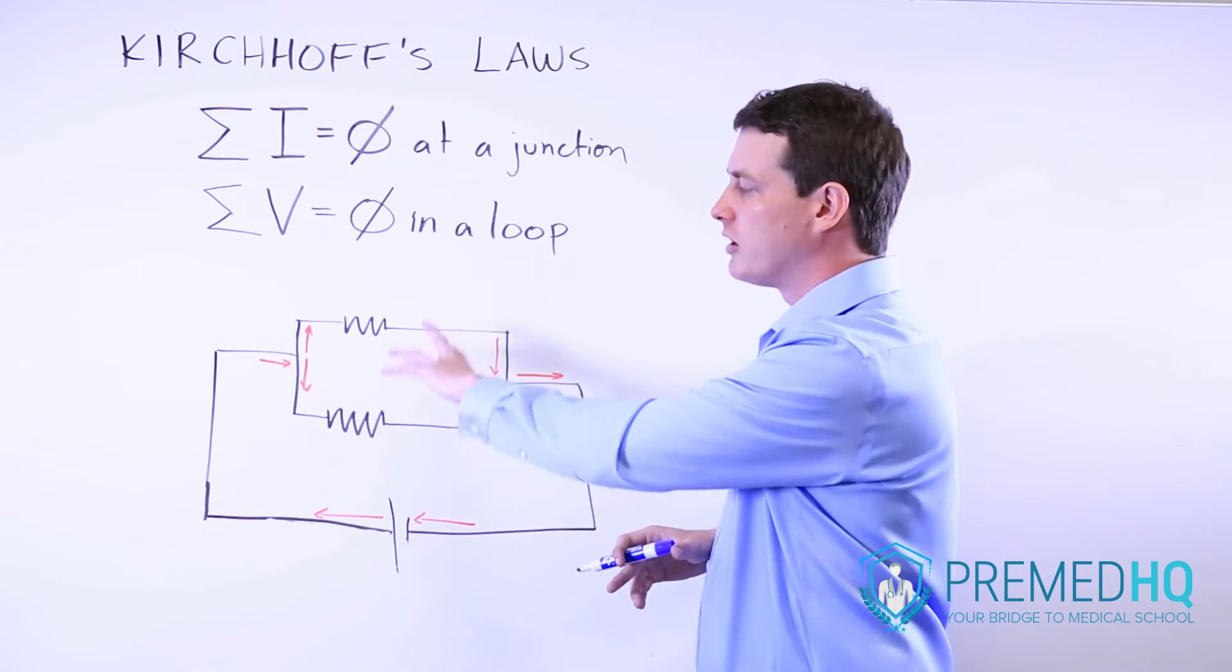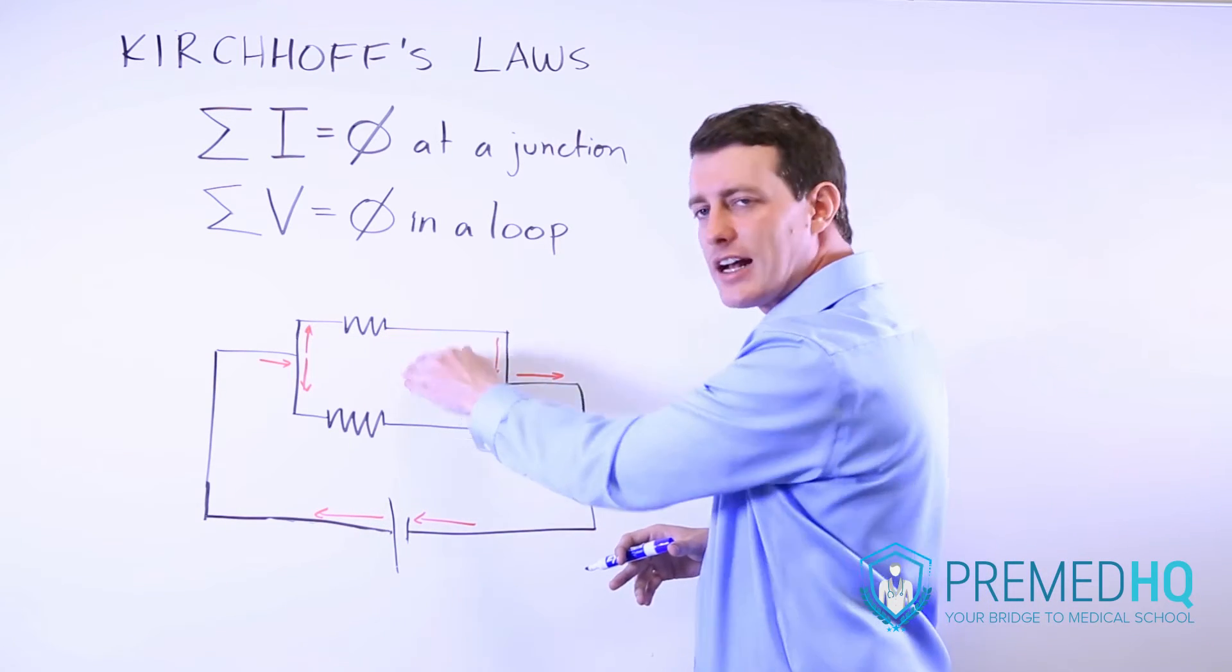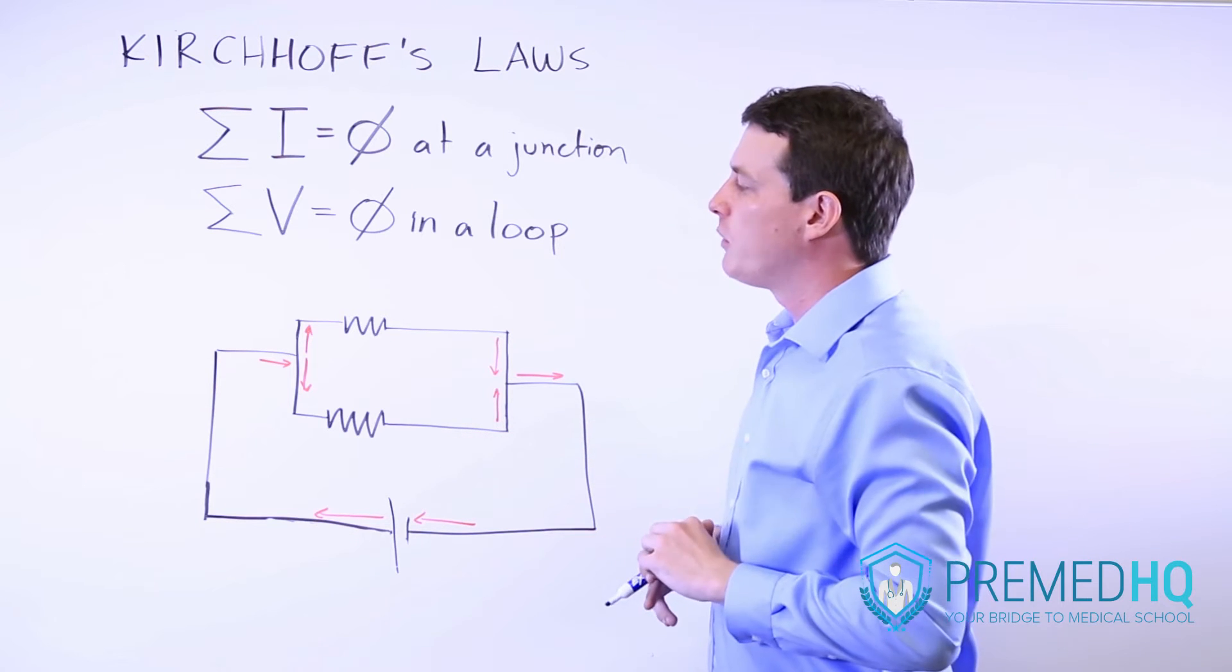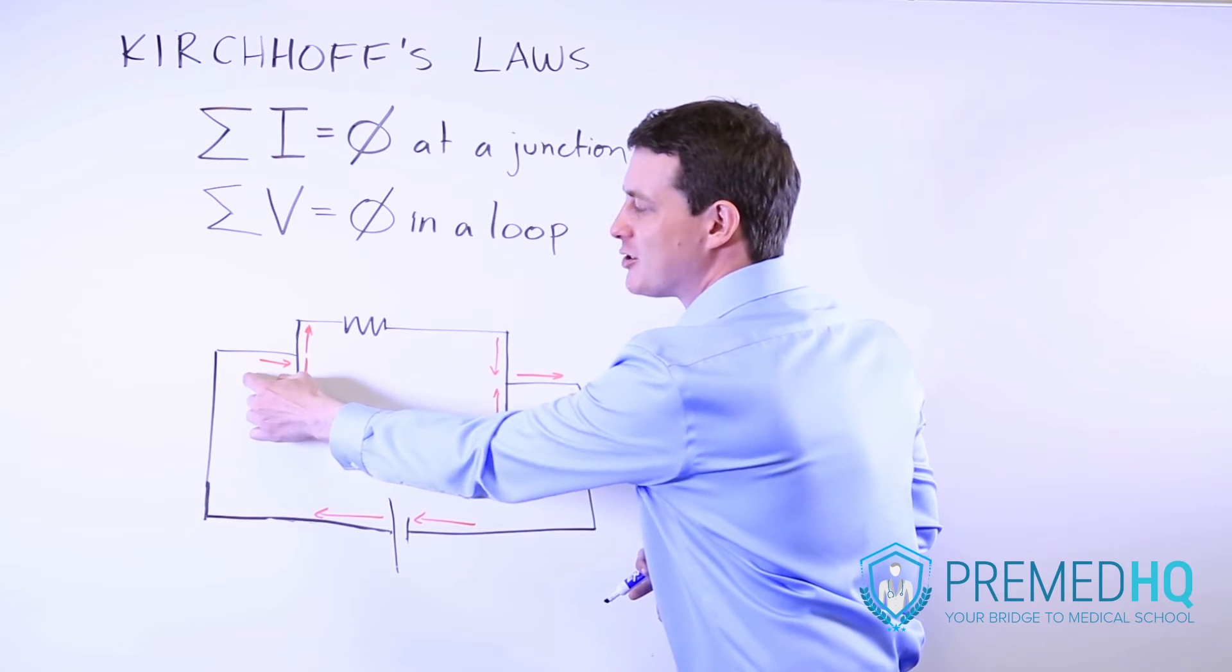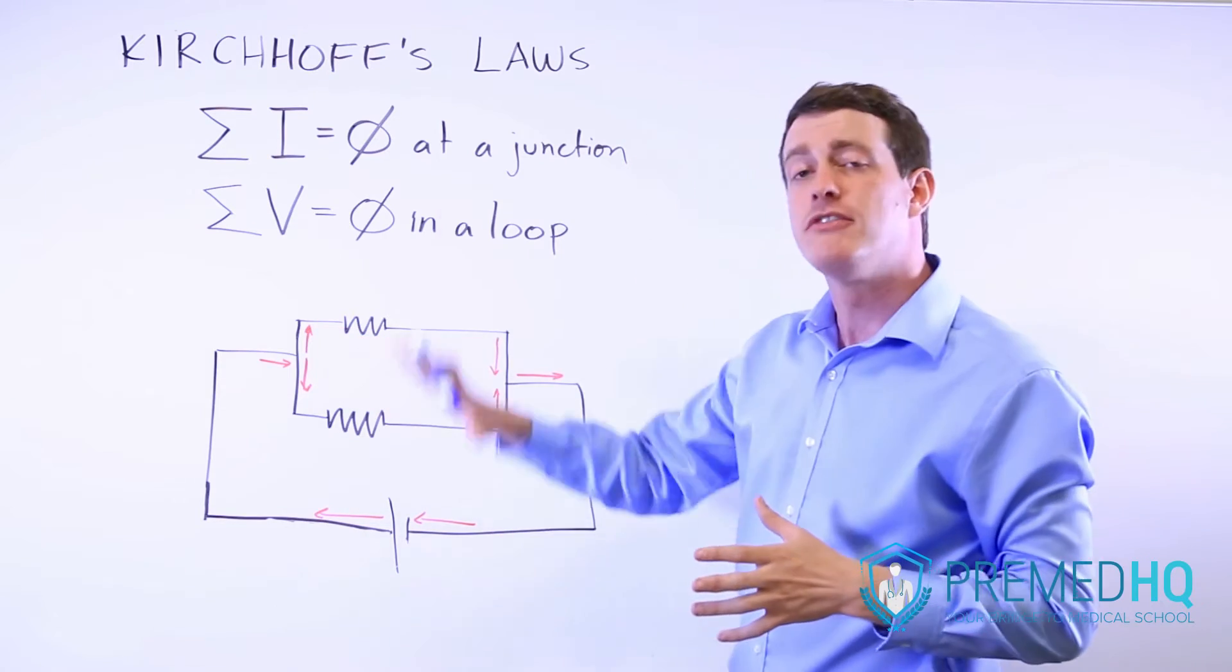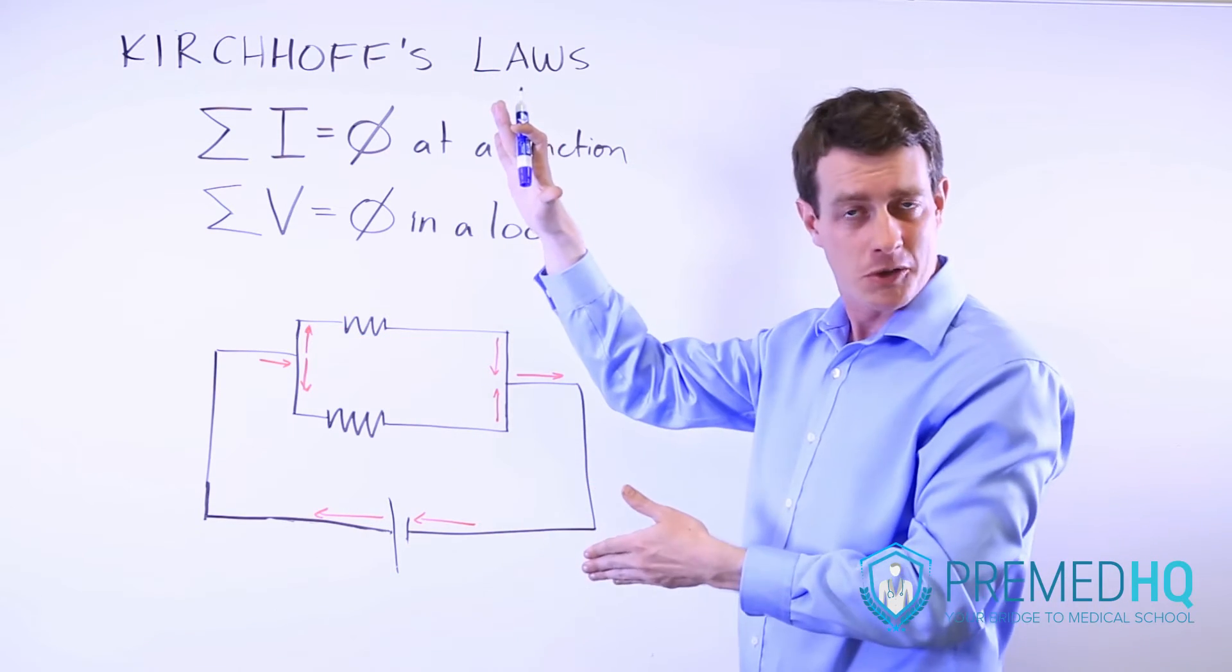Now if these two resistors were equivalent with each other, if they were the exact same resistance, then we would know that the current entering here would split evenly. Half of it would go to one path and half of it would go to the other.